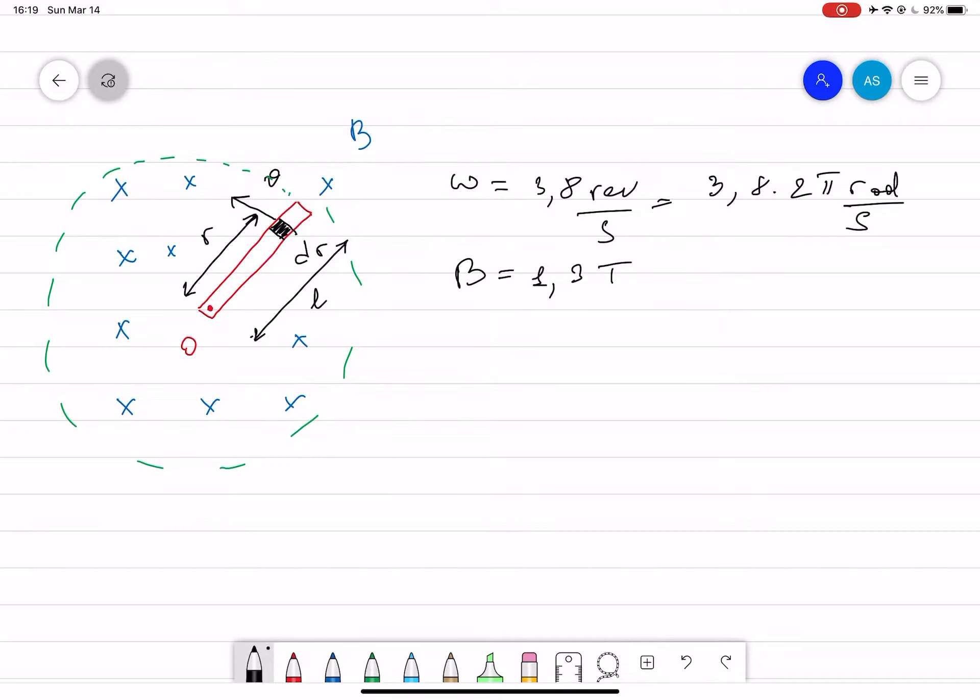So you have to find the EMF. Since we have a rod, we take a very small piece of it and call it dr. This dr element is a distance r away from the axis of rotation, and the total length of the rod is l.